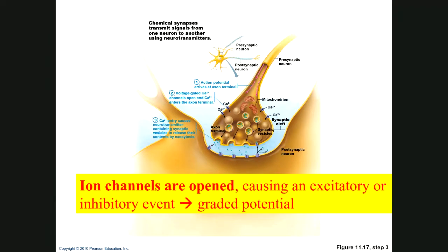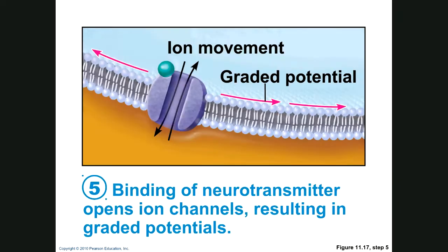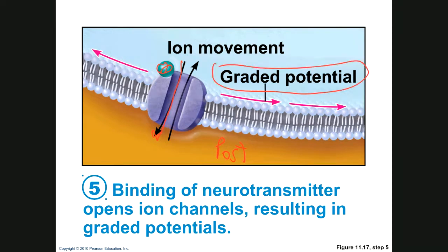When the neurotransmitter binds to the ion channel, the channel opens and ions move in or out. Depending on the net movement of ions and the type of ion moved, the postsynaptic neuron will either create an action potential or not. Either way, the response is called a graded potential. Whether it leads to an action potential depends on the kind of ion being moved into or out of the cell.